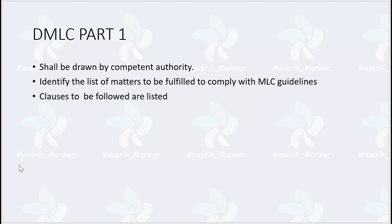DMLC Part 1 — what is DMLC? DMLC stands for Declaration of Maritime Labor Compliance. This is a document attached with the main MLC certificate, and it is endorsed by the flag. This document is drawn by the competent authority, which is the flag state. The document has a list of matters or clauses which are supposed to be fulfilled so that MLC guidelines are enforced on the ship.